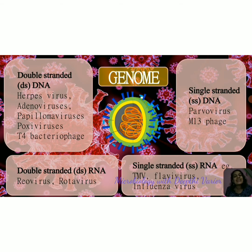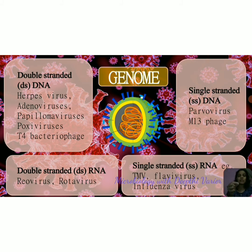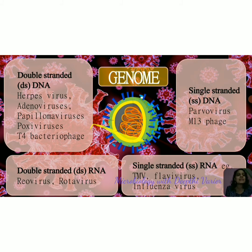Additionally, this DNA or RNA can be either single-stranded or double-stranded. It can be present in a single copy or in multiple copies — for example, 10 copies of double-stranded DNA as the genetic material. Additionally, the genetic material can be either linear, present in a straight fashion, or circular, meaning there are no open ends and it is all joined together. Based on all these criteria, we have divided the genetic material of viruses into four groups: double-stranded DNA viruses, single-stranded DNA viruses, double-stranded RNA viruses, and single-stranded RNA viruses.